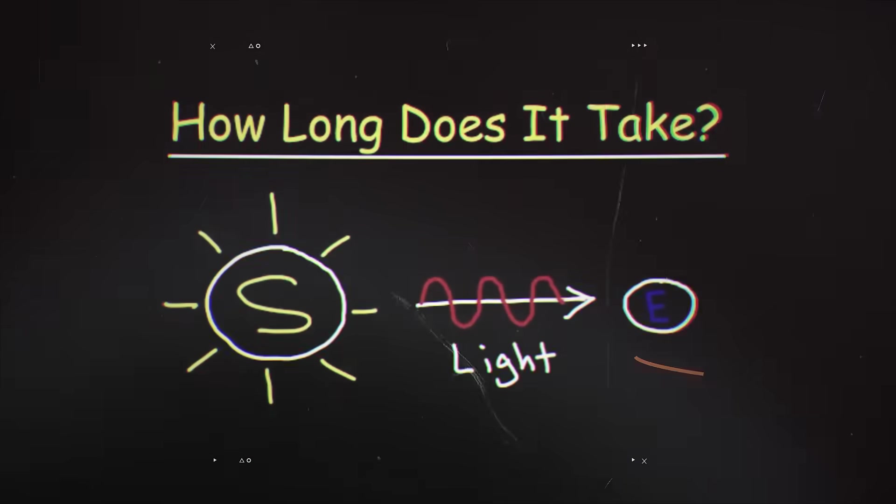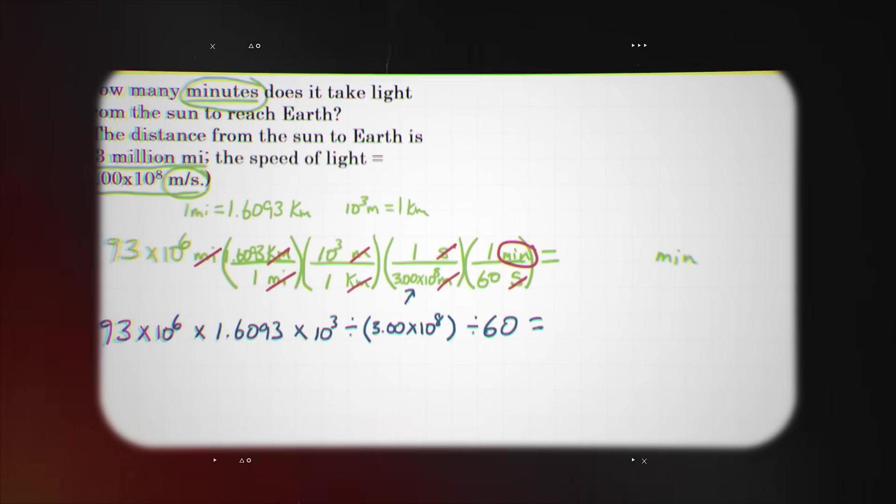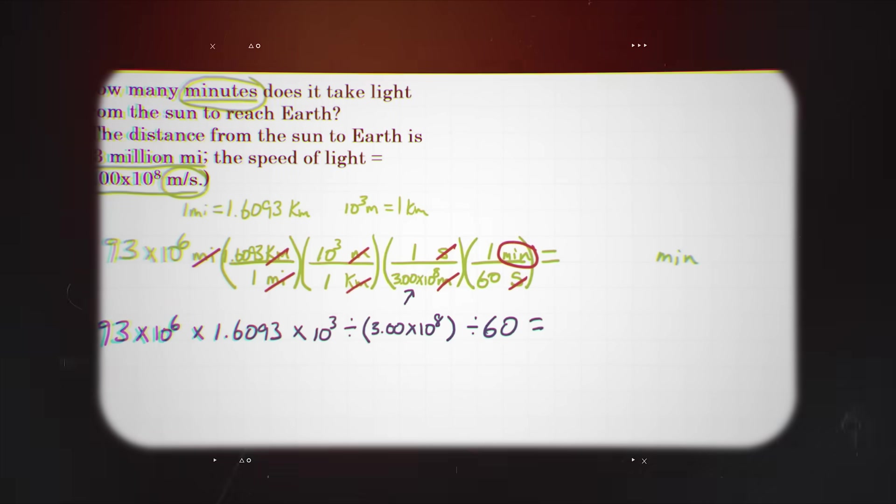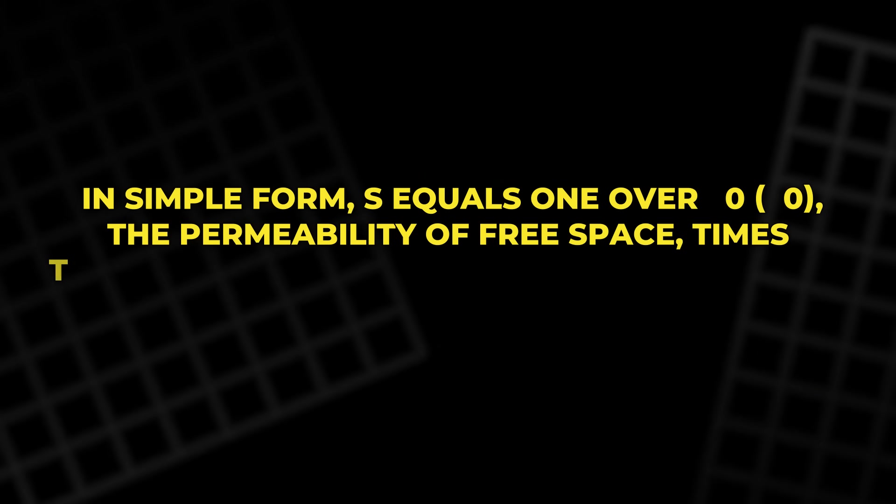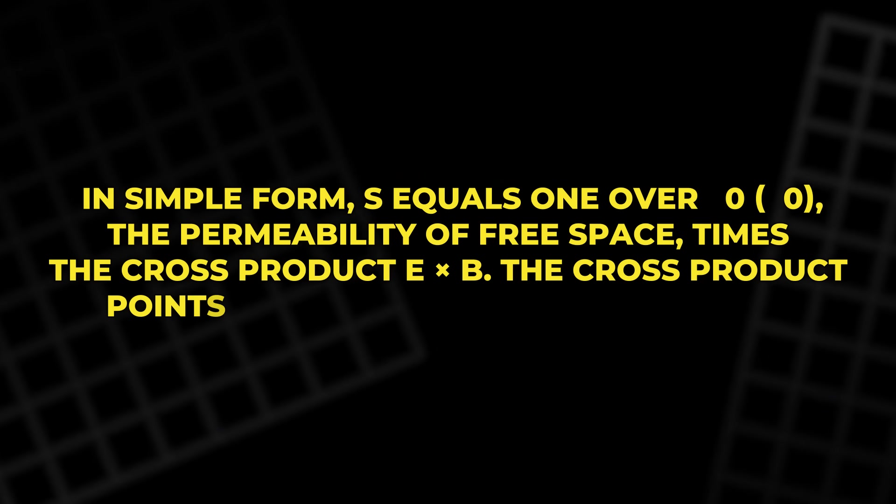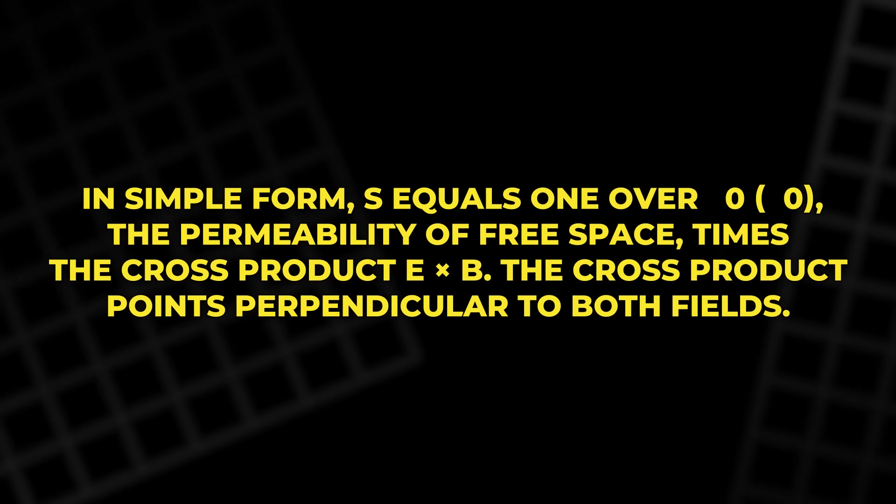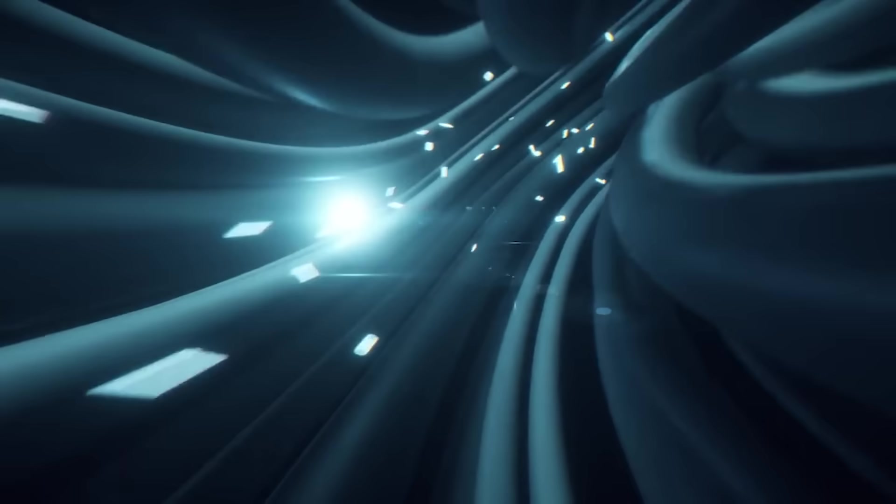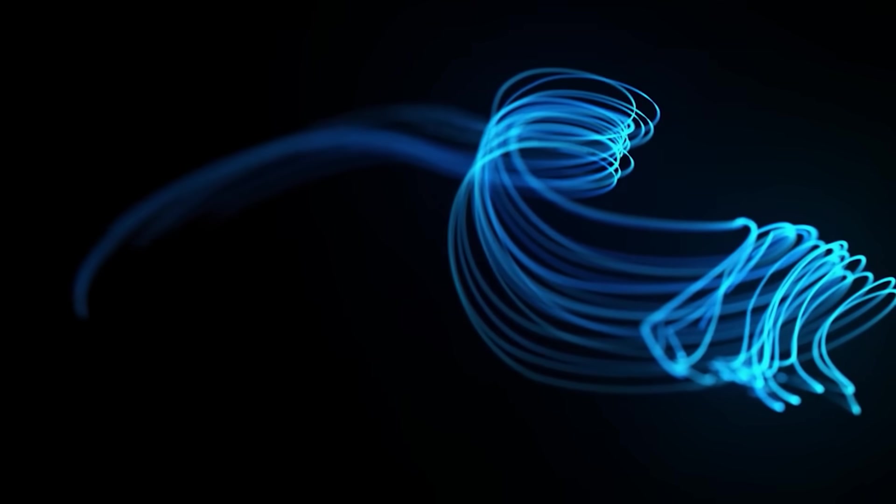Poynting wrote down the tool for that tracking. The Poynting Vector, usually written as S. Its size tells how much electromagnetic energy crosses a given area each second. In simple form, S equals 1 over μ₀, the permeability of free space, times the cross product E×B. The cross product points perpendicular to both fields. A right-hand rule gives the direction. Fingers along E, curl toward B, and the thumb points along the energy flow.